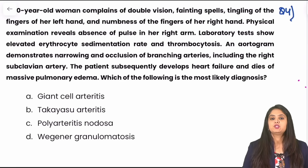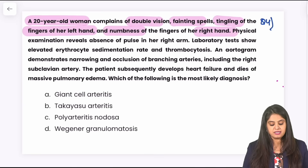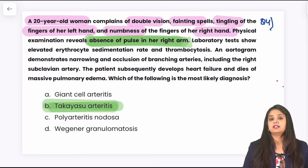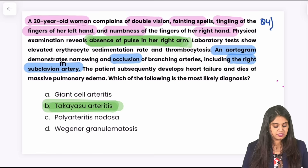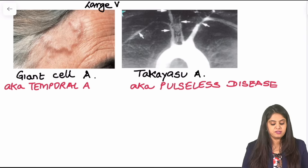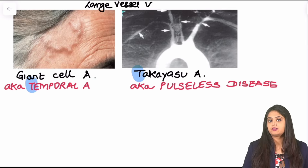Question number four: a 20-year-old woman complaining of double vision, fainting spells, tingling in the left hand, numbness in the right hand, and absence of pulse in her right arm. This is pulseless disease, which is Takayasu arteritis. An aortogram showed occlusion of the right subclavian artery — the most common artery affected in Takayasu. Comparing Takayasu with giant cell arthritis: both are large vessel vasculitis. Temporal artery is involved in giant cell (temporal) arteritis; Takayasu involves the arch of aorta, most commonly subclavian branches, causing pulseless disease.